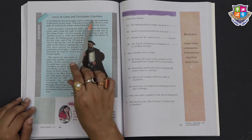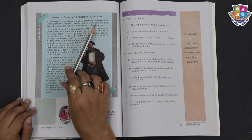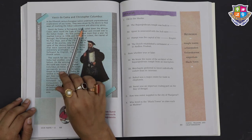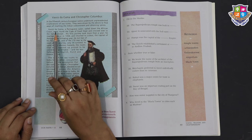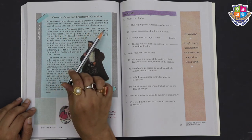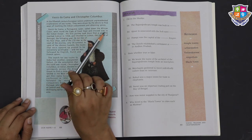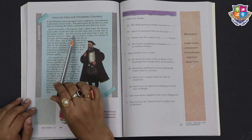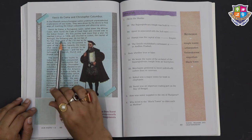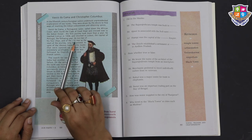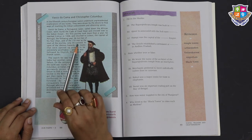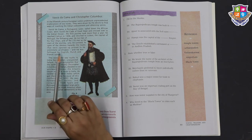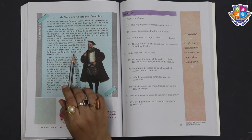Vasco da Gama and Christopher Columbus. In the 15th century, European sailors undertook unprecedented explorations of sea routes. They were driven by the desire to find ways of reaching the Indian subcontinent and obtaining spices. Vasco da Gama, a Portuguese sailor, sailed down the African coast, went round the Cape of Good Hope and crossed over to the Indian Ocean. His first journey took more than a year. He reached Calicut in 1498 and returned to Lisbon, the capital of Portugal, the following year. He lost two of his four ships and 170 men at the start of the journey. Only 54 survived. In spite of the obvious hazards, the routes that were opened up proved to be extremely profitable, and he was followed by English, Dutch and French sailors.